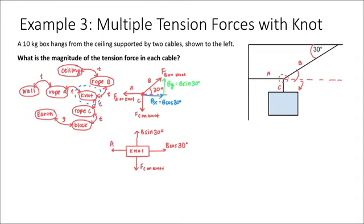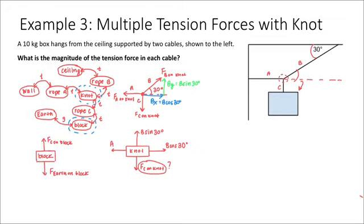I've redrawn that diagram showing those components pointing up and to the right. Now in order to solve, I need a bit more information. What is the force that rope C exerts on the knot? Let's take a look at the force diagram for the block itself. If I draw a system boundary around the block on my interaction diagram, I see there are two forces acting on the block: the earth pulling the block down, and rope C pulling the block up. These forces are opposite in direction, and because the block is not accelerating, they must be equal to each other.